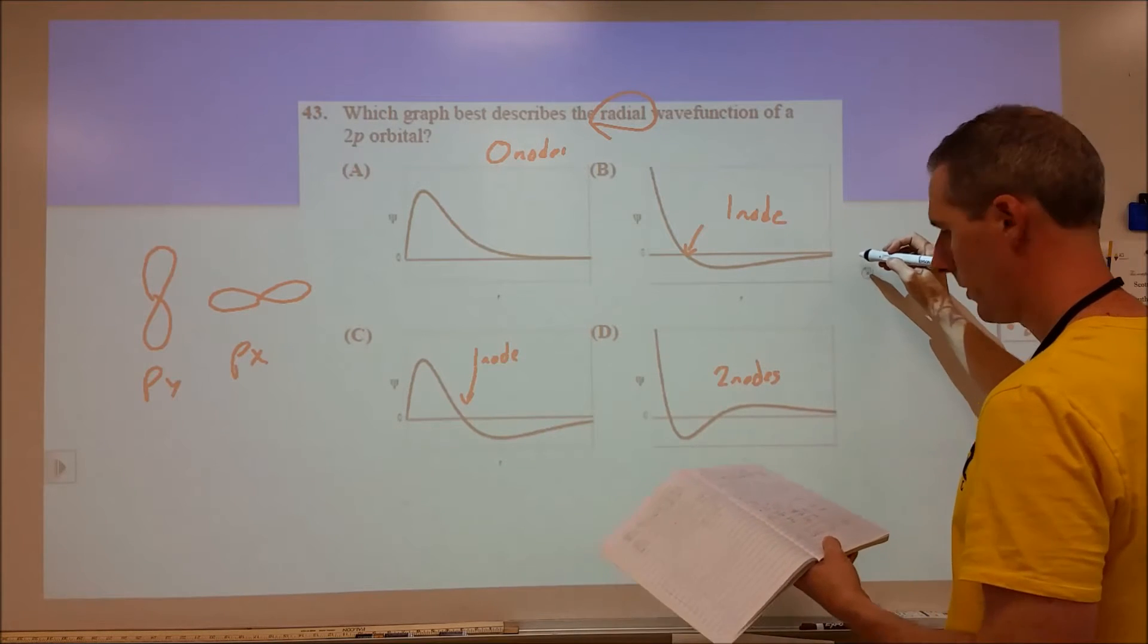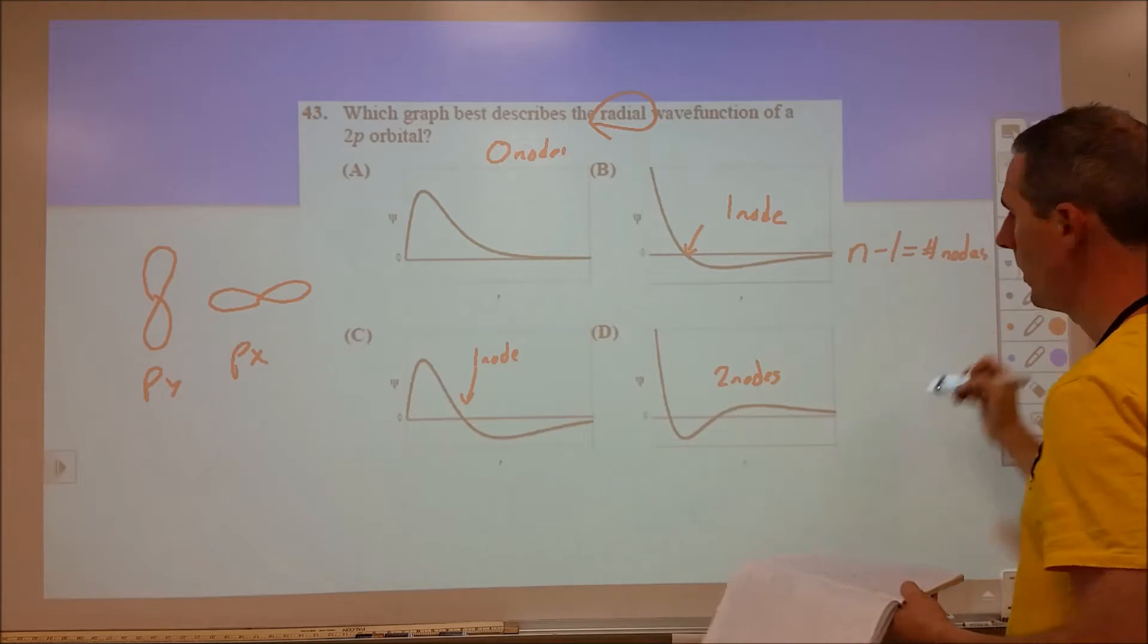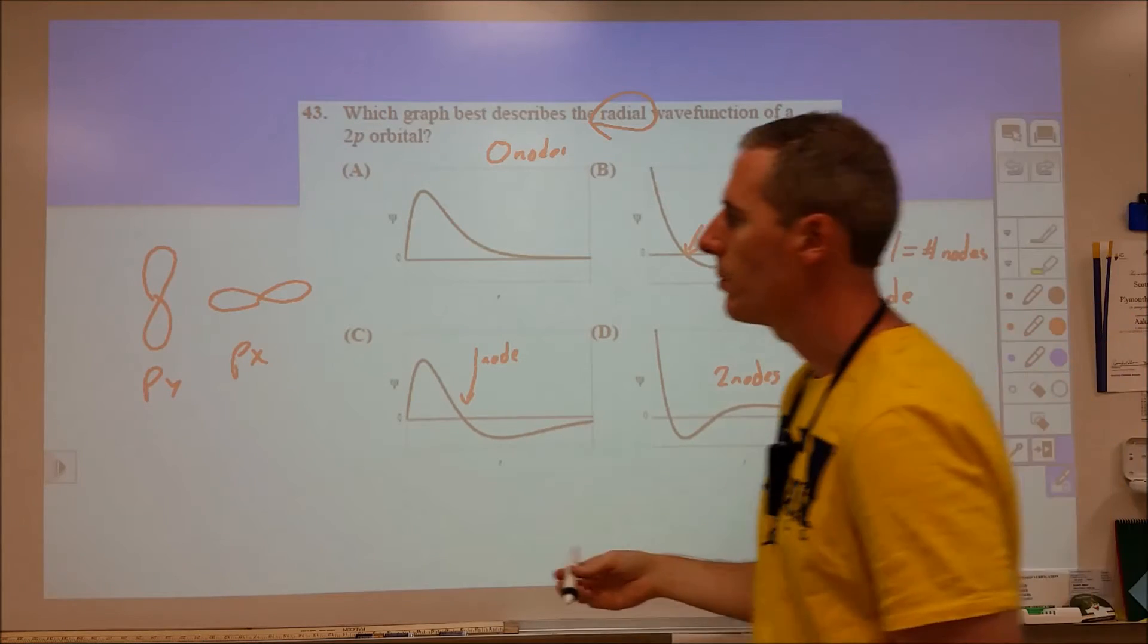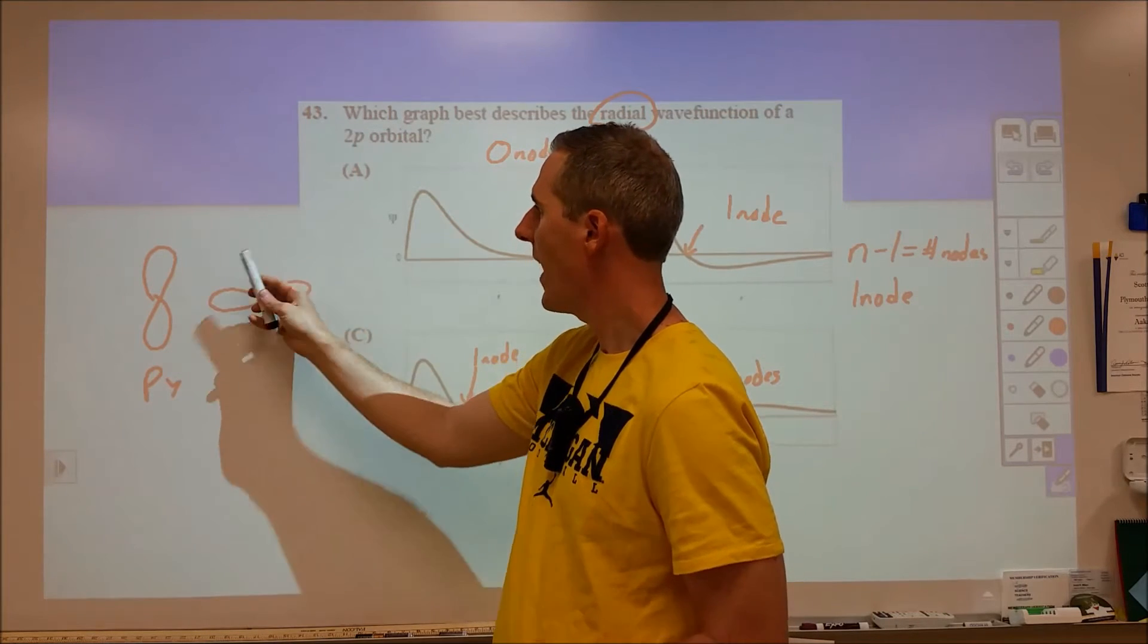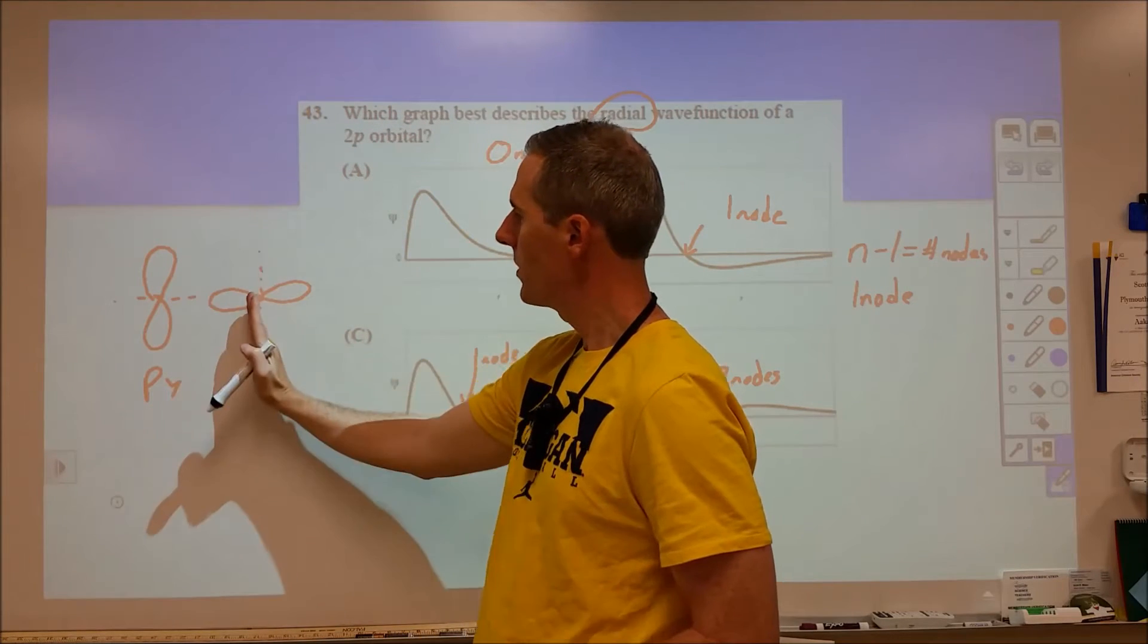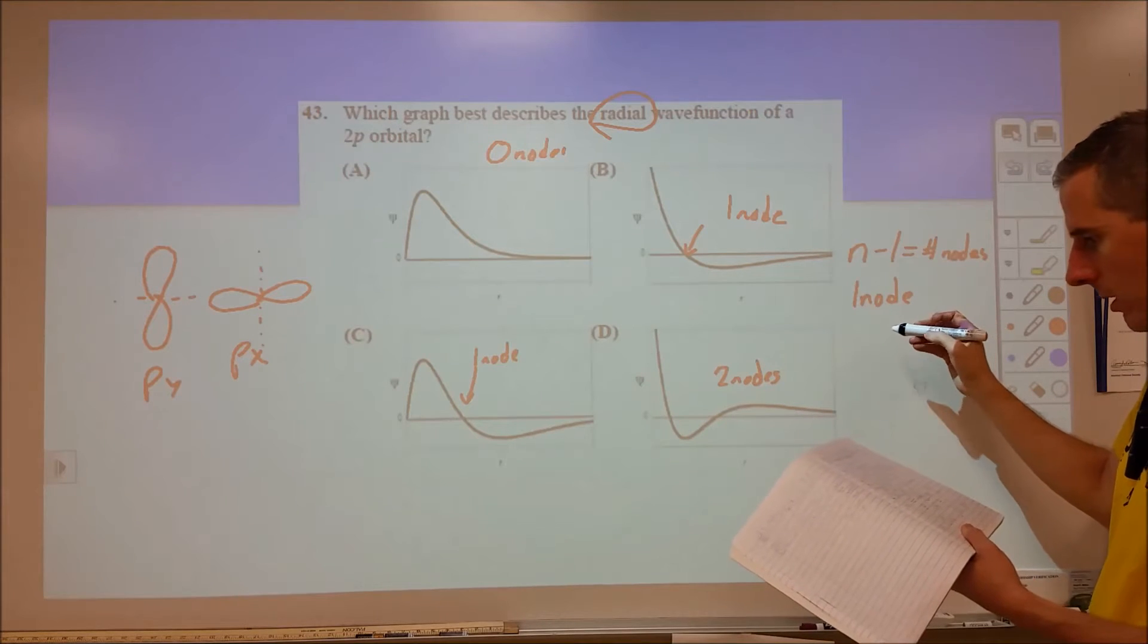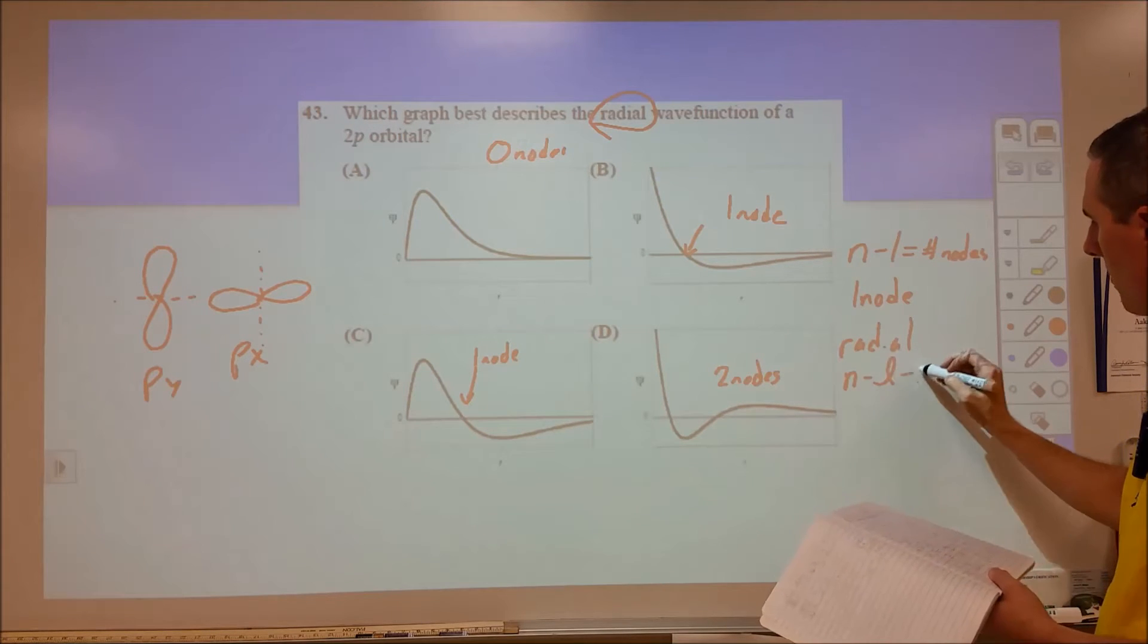The number of nodes depends on a couple things. N minus one equals the number of nodes you will have. So a 2p, N is 2, 2 minus 1, we should have one node. But if you're familiar with this shape, this is not a radial node you're seeing. You're seeing an angular node. At a certain angle, there's no electron density. The point is right here as we rotate, that's when we experience the node.